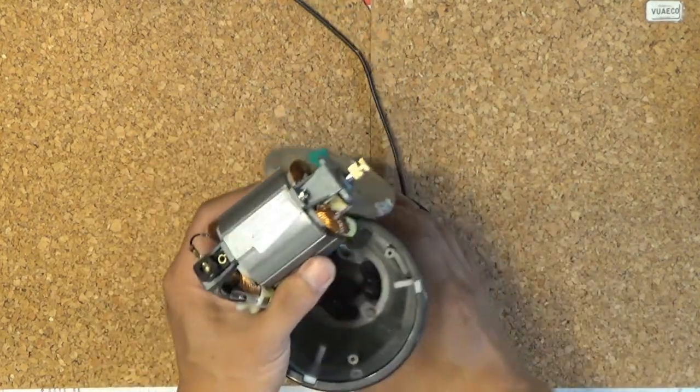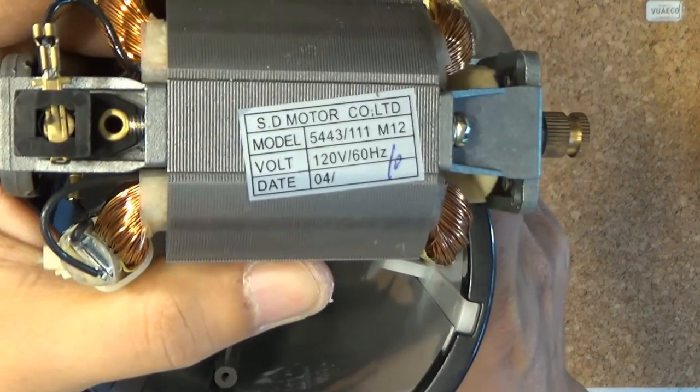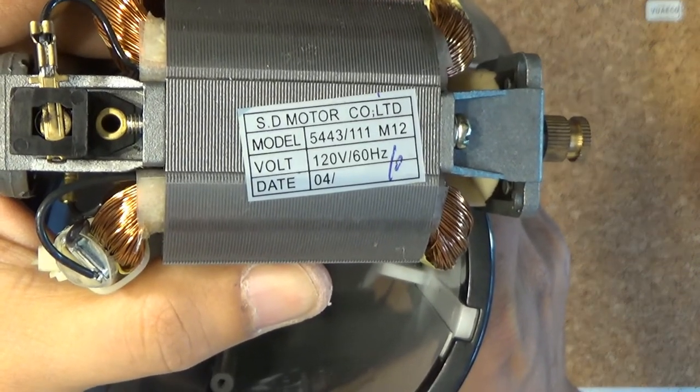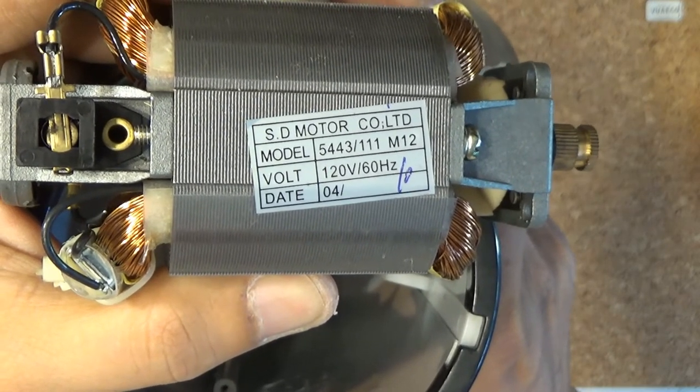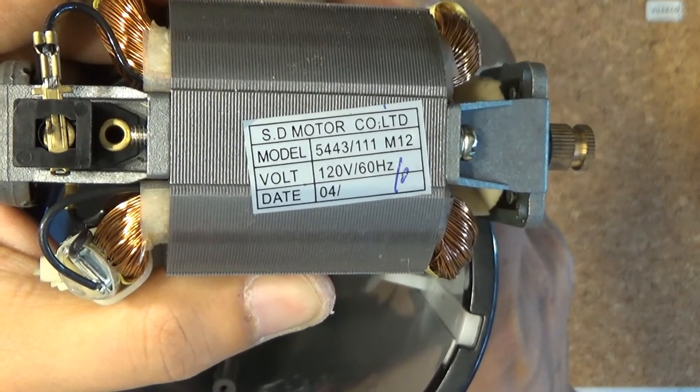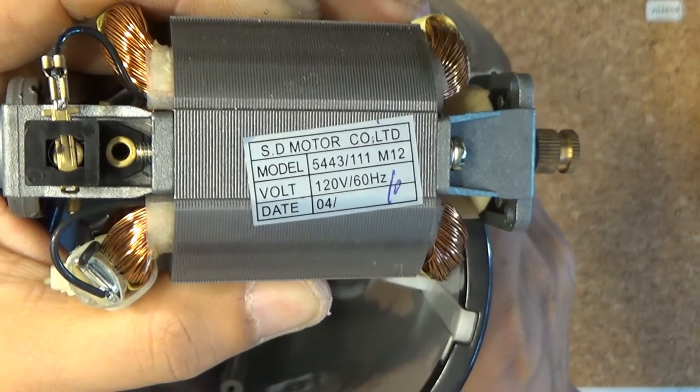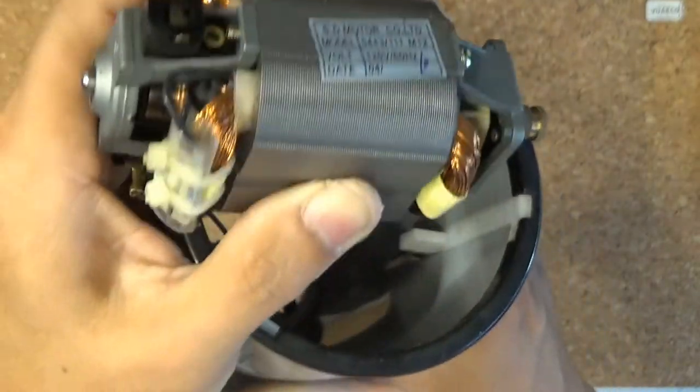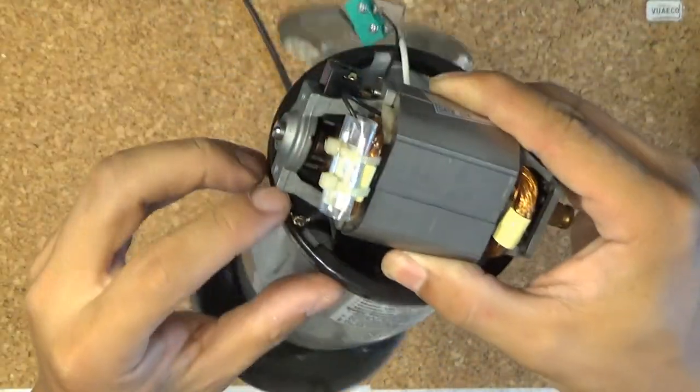Let me show you the detailed specs of the motor: 120 volts, 60 Hertz. I assume it's an AC motor, not sure if we can run on DC though. It's a brush motor, so there are brushes here, one brush on here, another brush on this side. Beautiful motor.